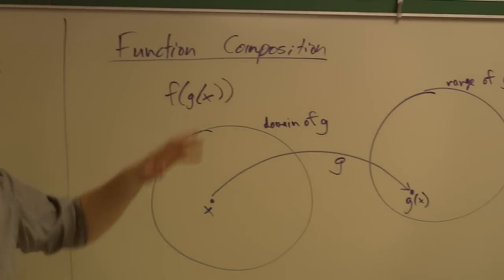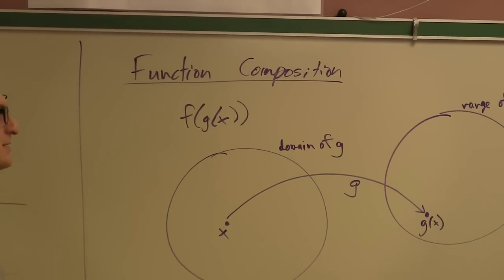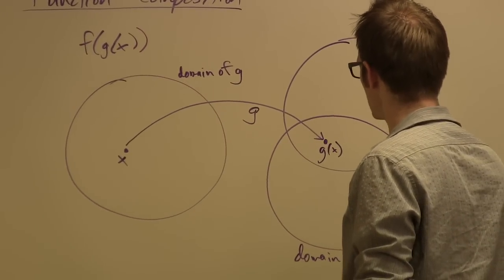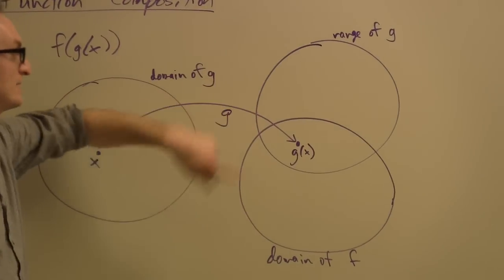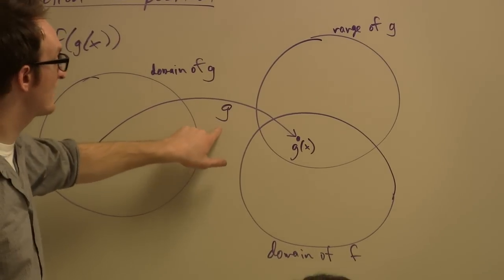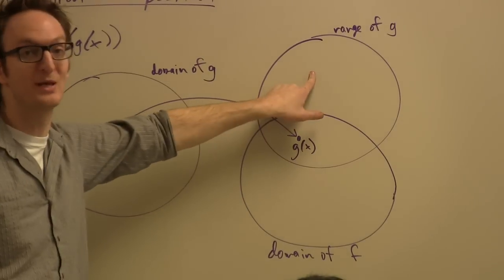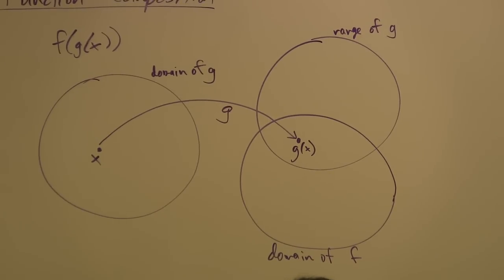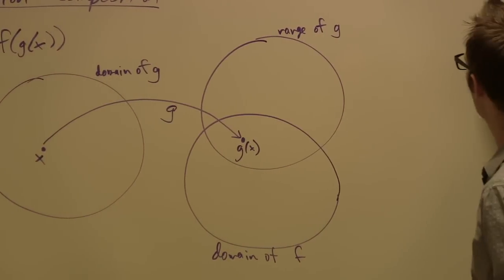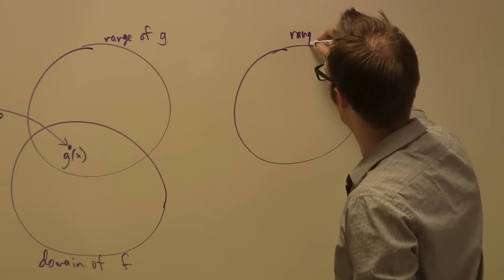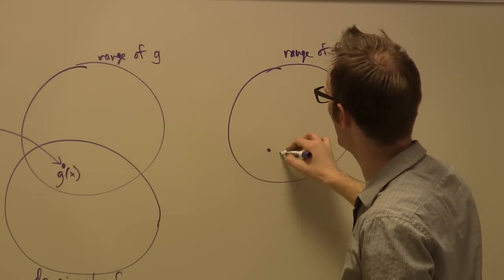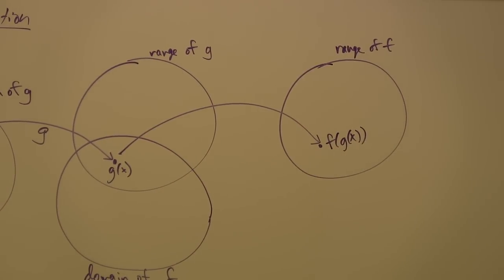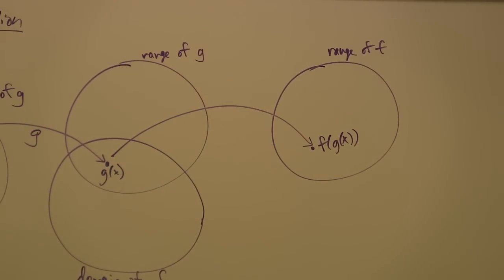Then of course, what do we do with g of x? We plug it into f. So it better be that this point g of x is in the domain of f. If some outputs of g land outside the domain of f, you get stuck. Hopefully g of x lands inside the domain of f. Then you plug it into f, and you get f of g of x over here in the range of f. You plug in x, it goes to g of x, then it goes to f of g of x.